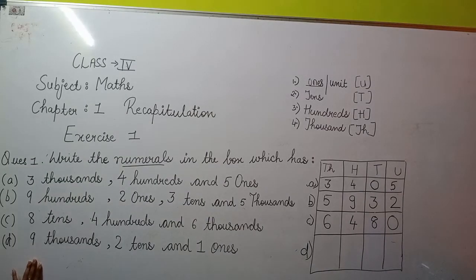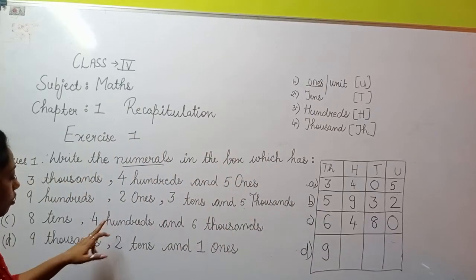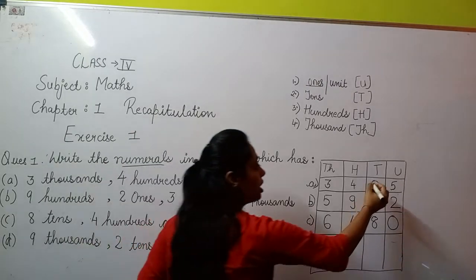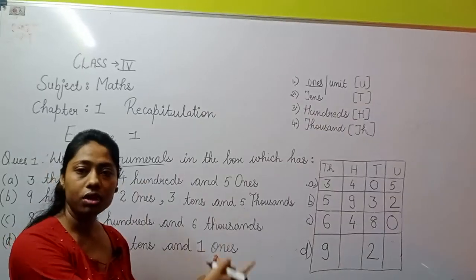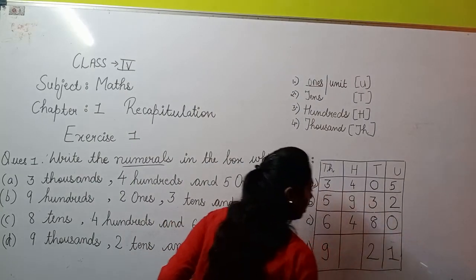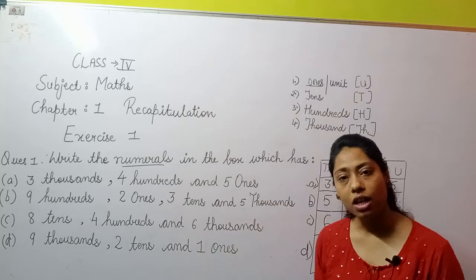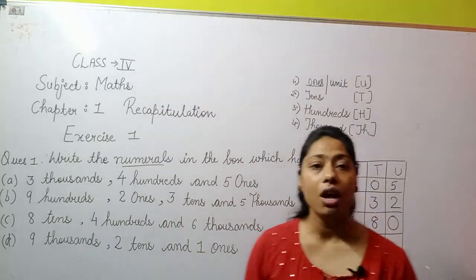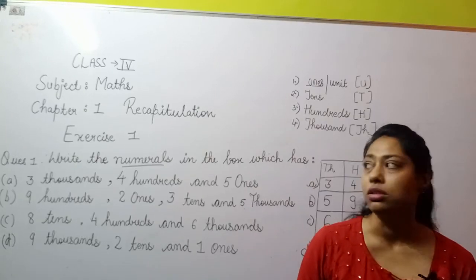Part D: given hai 9 thousands — thousands place par nine likhna hai. Two tens — tens place par two likhna hai. Ones/unit place par one likhna hai. Hundreds ka toh kuch given hi nahi hai, aur jab koi place given nahi hoti toh zero lagaana hota hai. So your number becomes 9,021 — nine thousand and twenty one. This was Exercise 1, Question number 1. I hope you understood.